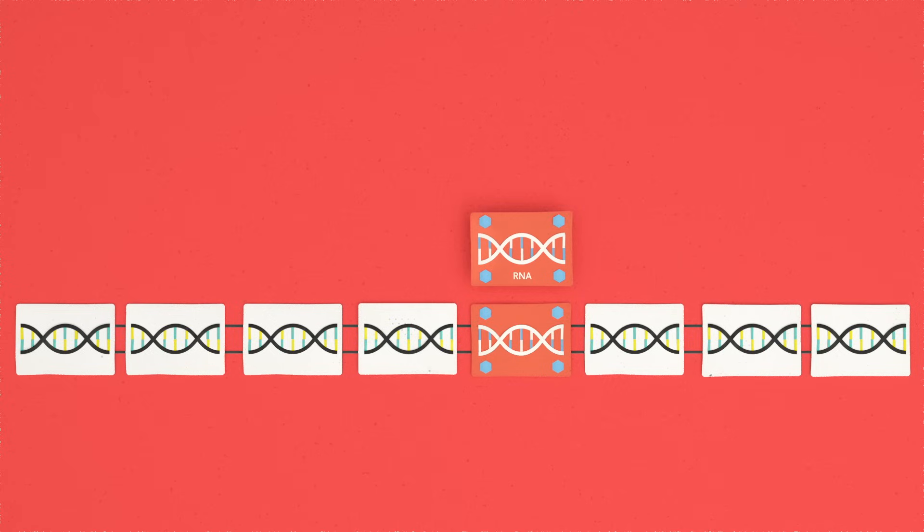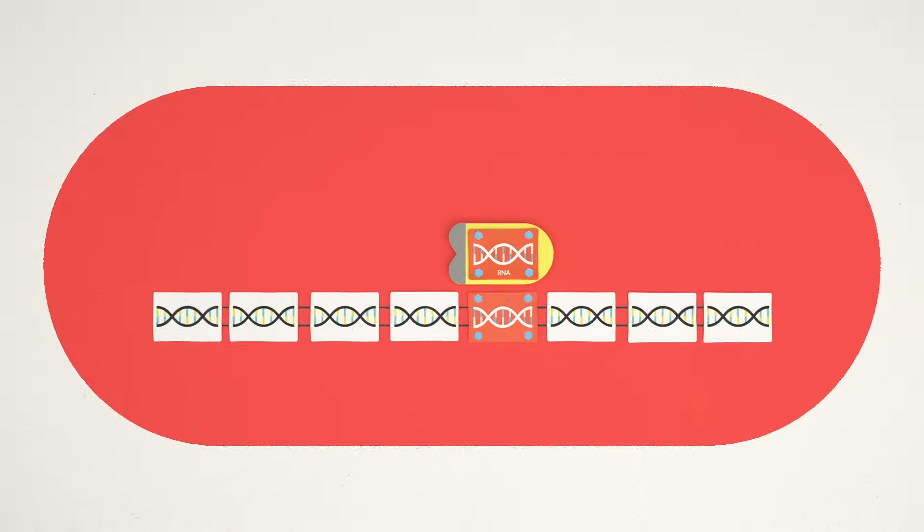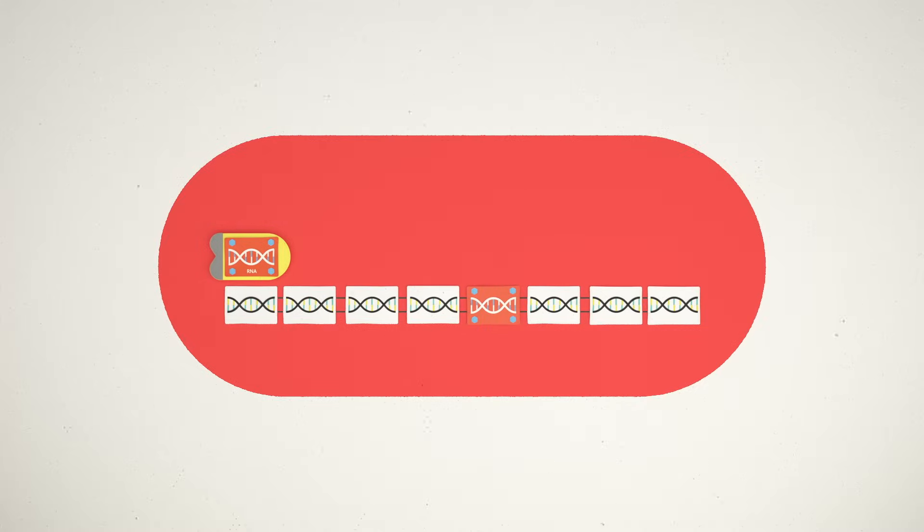Those viral codes are then copied into short pieces of RNA. This molecule plays many roles in our cells, but in the case of CRISPR, RNA binds to a special protein called Cas9. The resulting complexes act like scouts, latching onto free-floating genetic material and searching for a match to the virus. If the virus invades again, the scout complex recognizes it immediately, and Cas9 swiftly destroys the viral DNA.